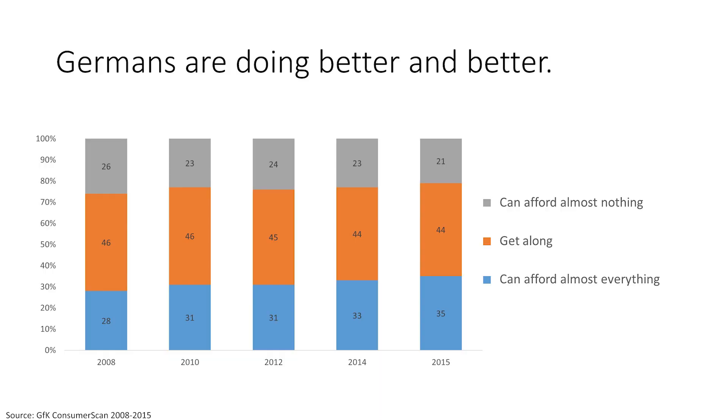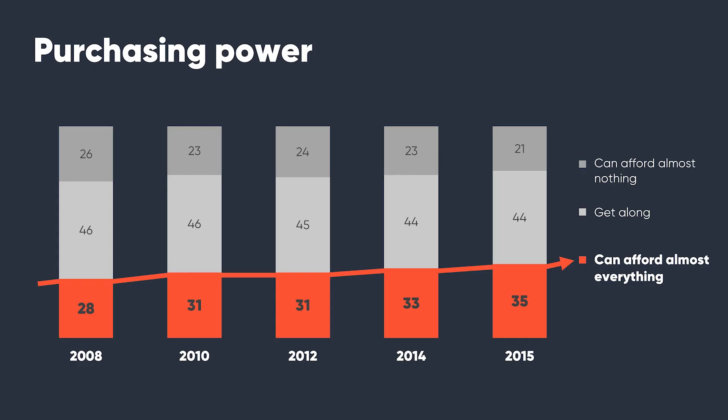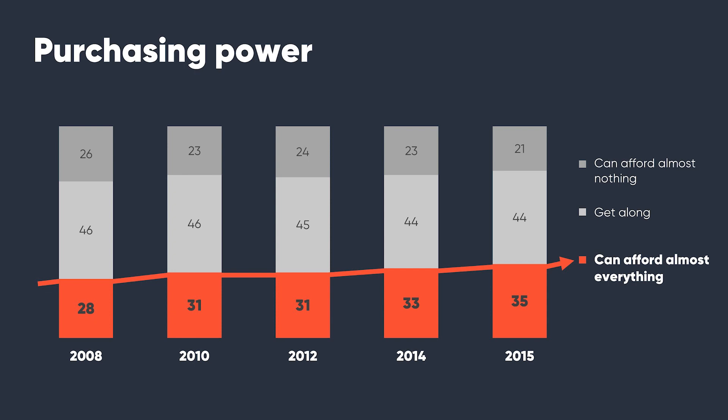Using graphs well is always about supporting your key message. Here the graph isn't really helping to get it — the five bars all look very similar. This is different: I have highlighted the key message with the corresponding figures, and the arrow also does its part, and the headline doesn't give away your key insight. Now you can say purchasing power has increased significantly in recent years. It seems that Germans are doing much, much better economically. And now we have a graph that really represents what you are saying.